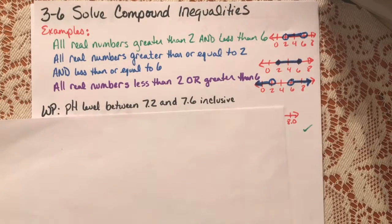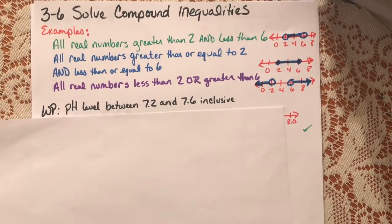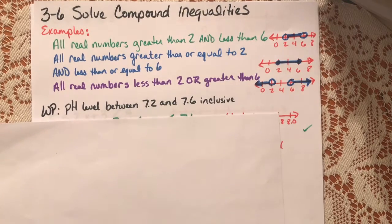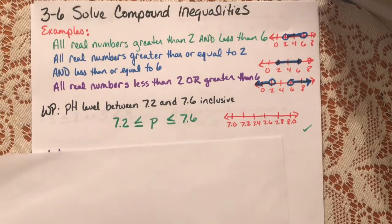Now, when do you come across this? They start off with a word problem. A water analyst recommends that the pH level of swimming pool water be between 7.2 and 7.6 inclusive, which means it includes 7.2 and 7.6. So it's an "and equal to" kind of situation. Write a compound inequality to show the pH levels that are within the recommended range.